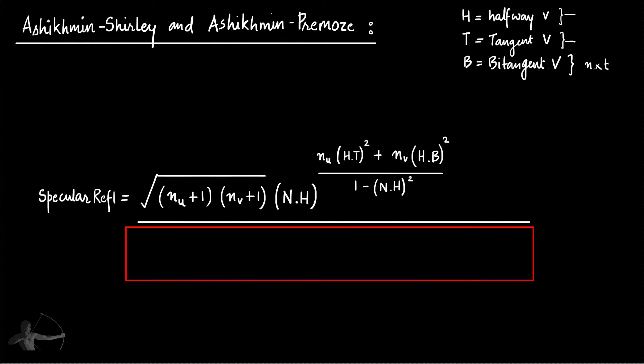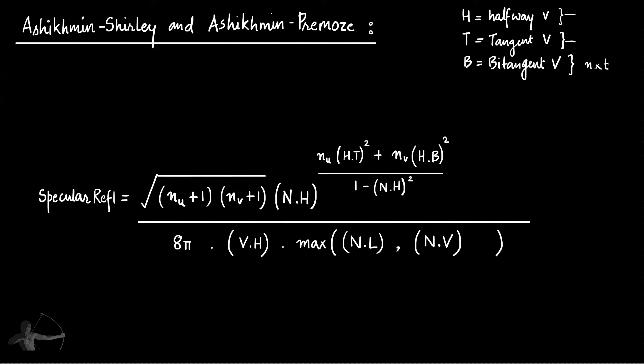And the denominator of this equation is 8 pi multiplied by v dot h, view direction dot halfway vector. And then we will multiply it with max, which takes two parameters, n dot l, another parameter will be n dot v. So whichever will be of higher value will be returned by max function.